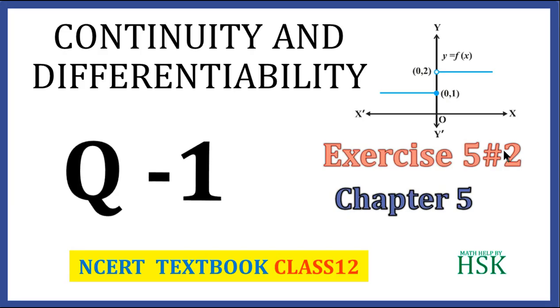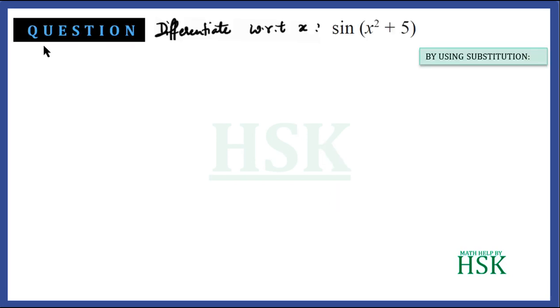This is question number one of exercise 5.2 from the chapter Continuity and Differentiability. The question is: differentiate with respect to x, sine of (x squared plus 5).